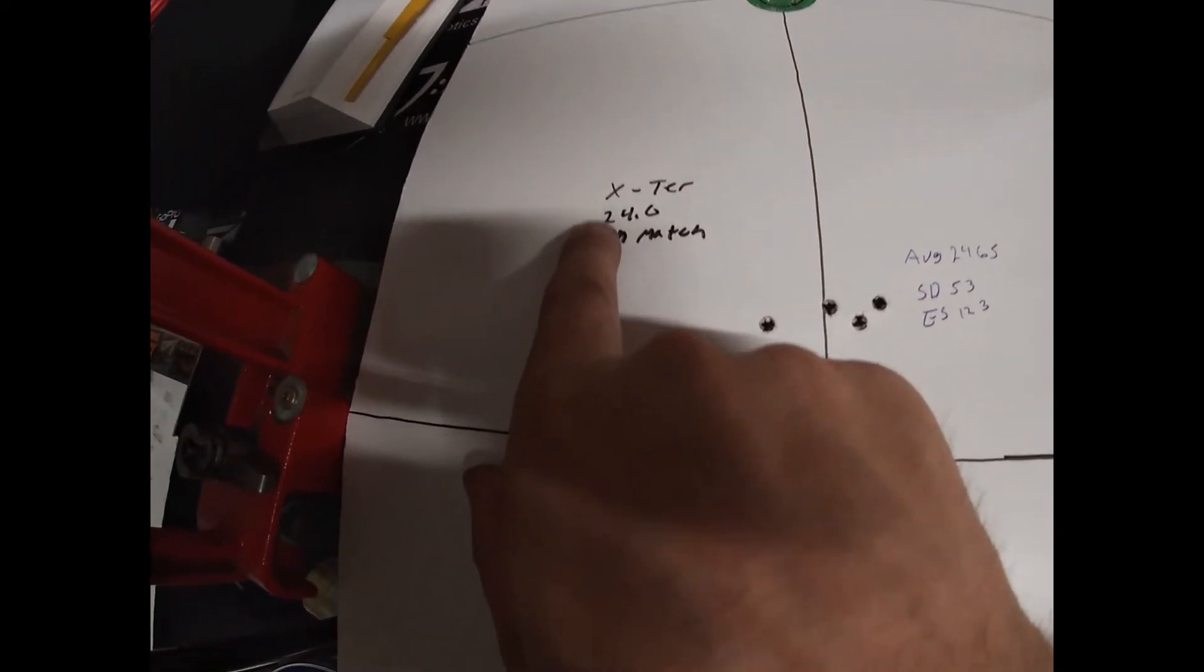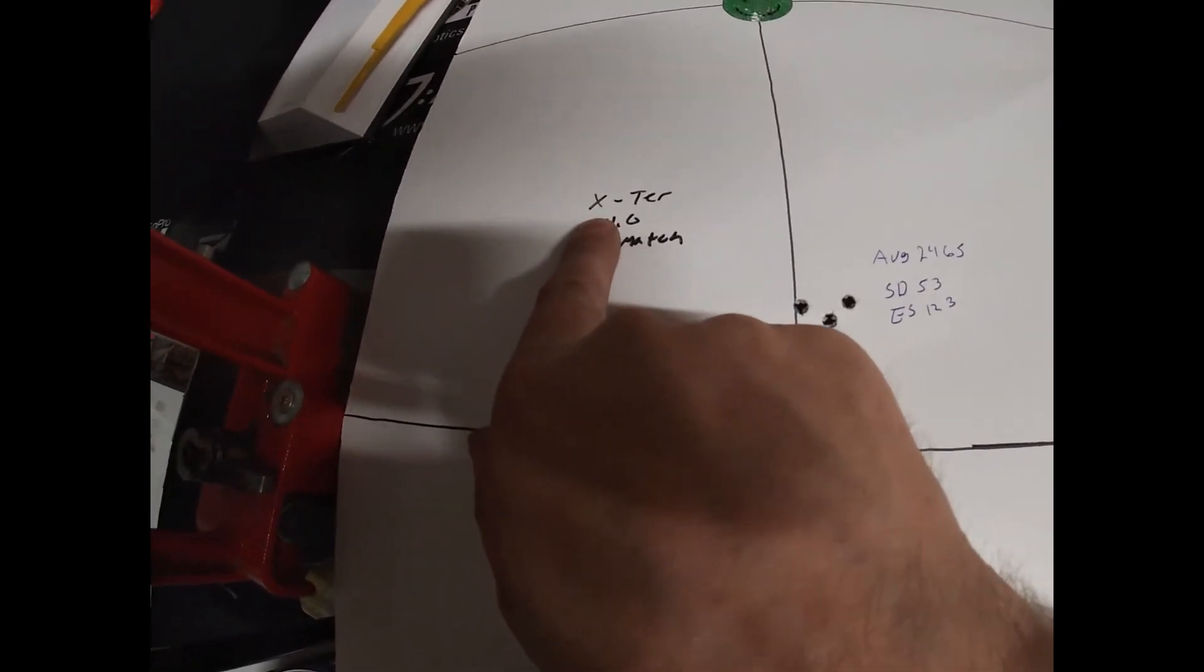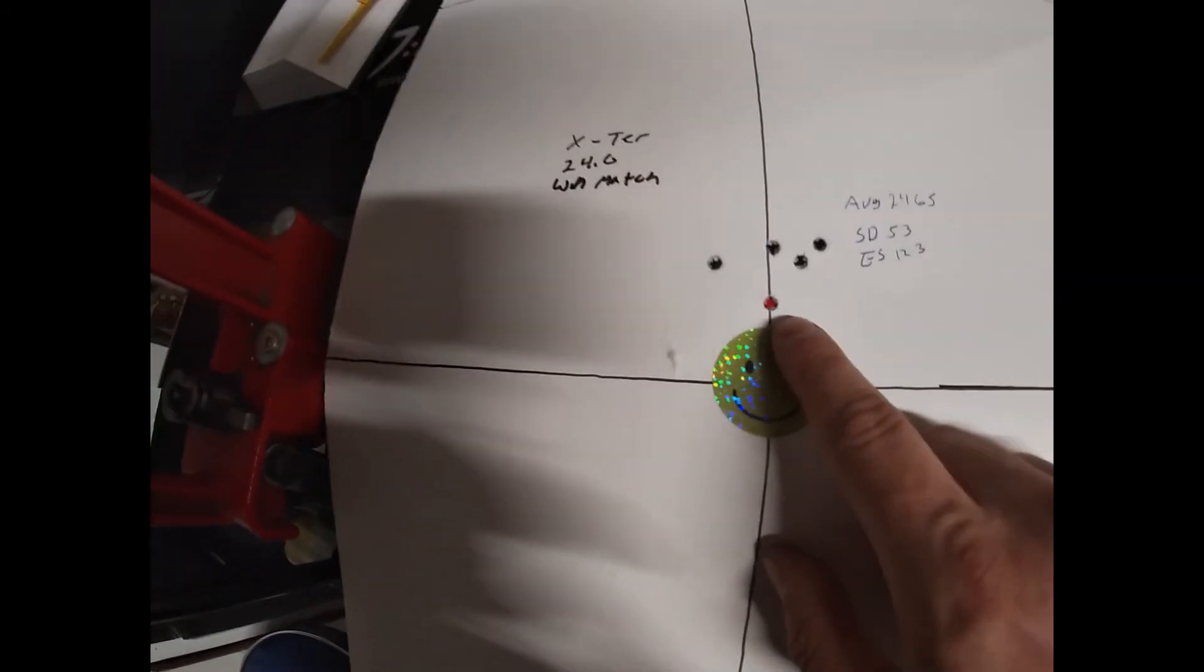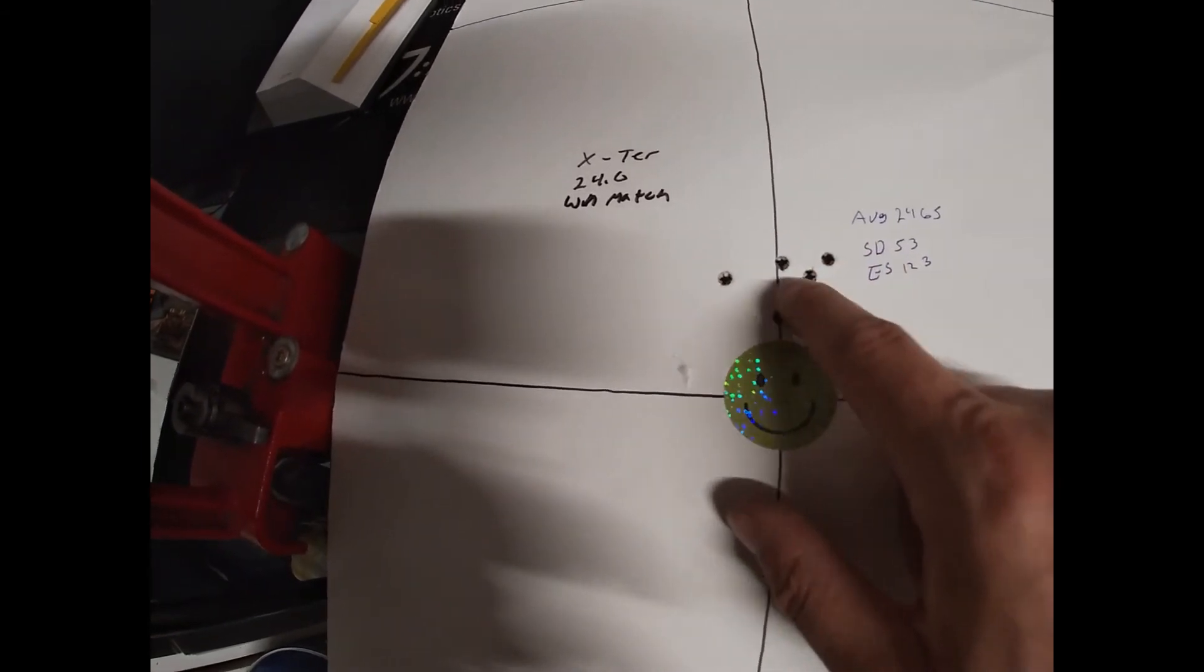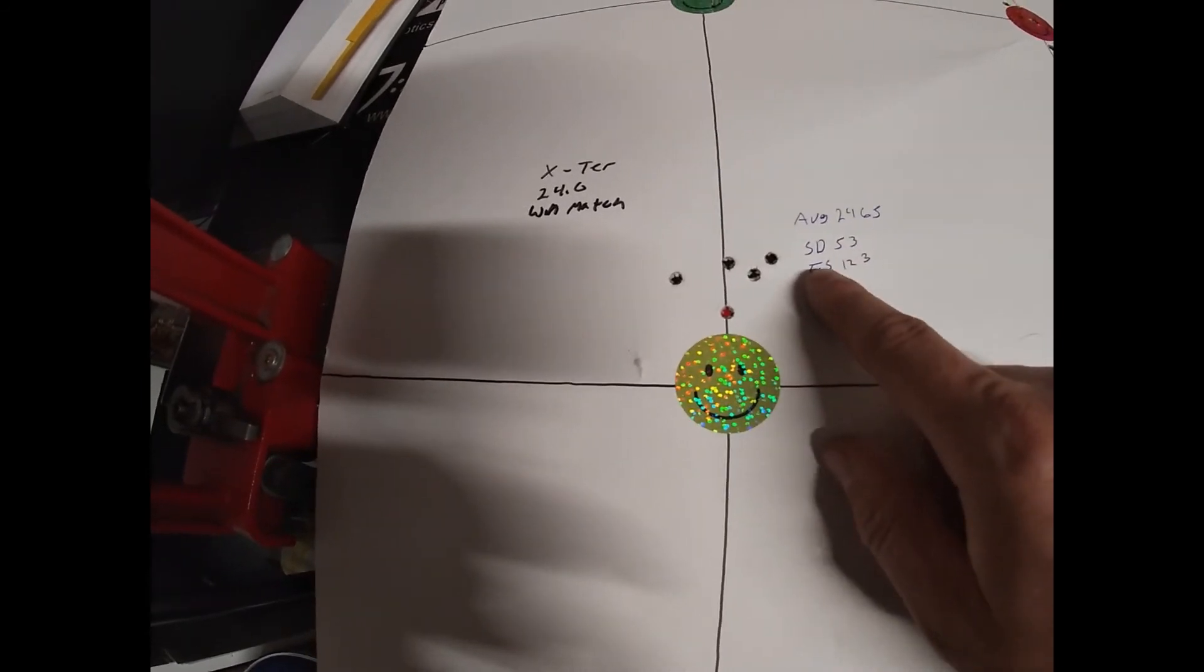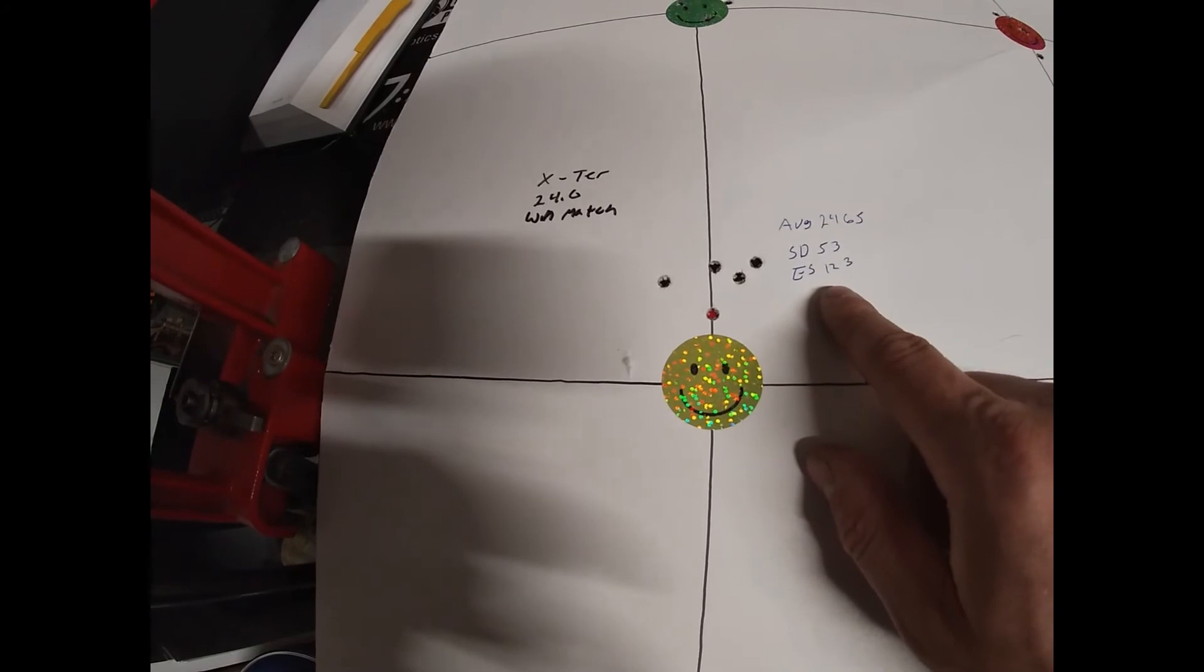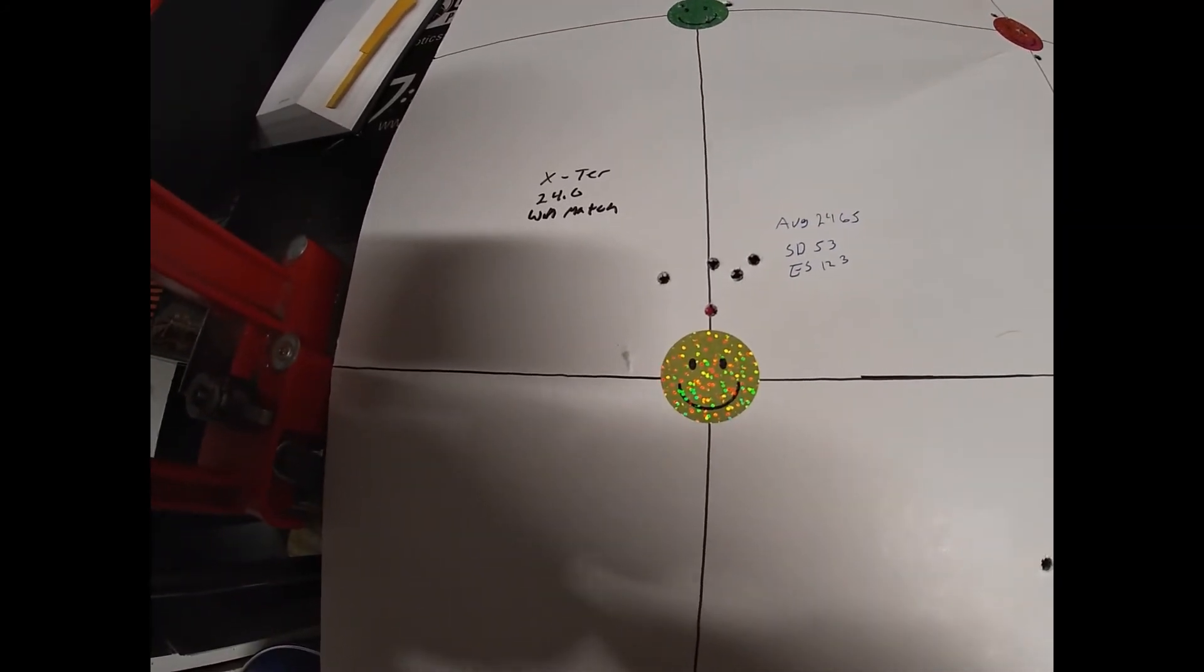And then here we go for the Winchester match primers with the Exterminator powder, Ramshot, 24 grains of powder. And here's our group right here. This is a little over an inch, inch group. And then we have an average of 2465, a standard deviation of 53, an extreme spread of 123.